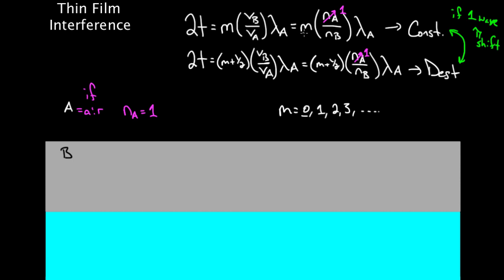Can m equal zero? Yes — if the thickness is very, very small compared to the wavelength of light, it's as if the thickness is zero, and that will give you either constructive or destructive depending on the pi shift. Anti-reflective coating is often just a coating so thin compared to the wavelength of light that all the light reflects destructively, because you do get a pi shift and integers give you destructive. So that's thin film interference — sometimes it confuses people, but hopefully these are the tools you need to deal with it.